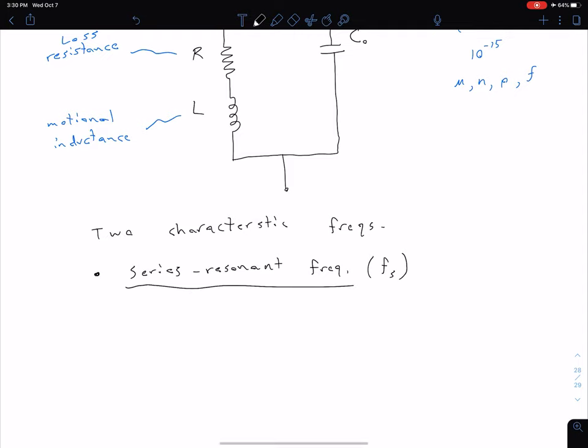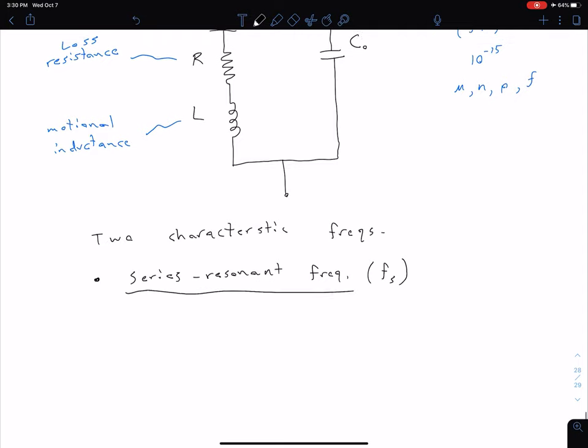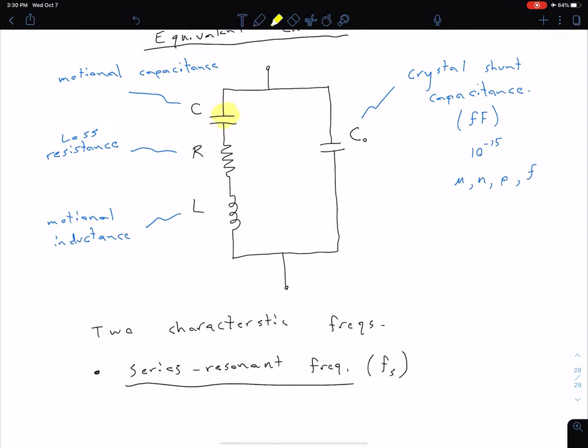So our series resonant frequency, which we're going to call F sub S, what basically happens is the reactances of C and L over here in this left branch are canceling each other out. When we looked at resonant frequency back in junior year, we said that we have a zero imaginary part to our impedance. Because this left branch, these two components are in series, that's why this corresponds to our series resonant frequency.